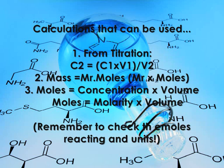Remember: 1 decimetre cubed equals 1000 centimetre cubed. That is a very important piece of information, and that's acids and bases done.